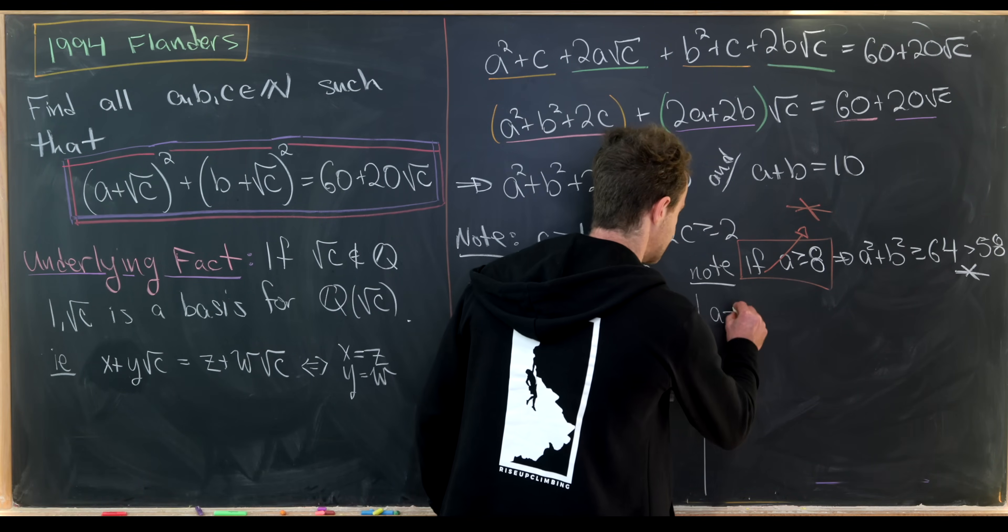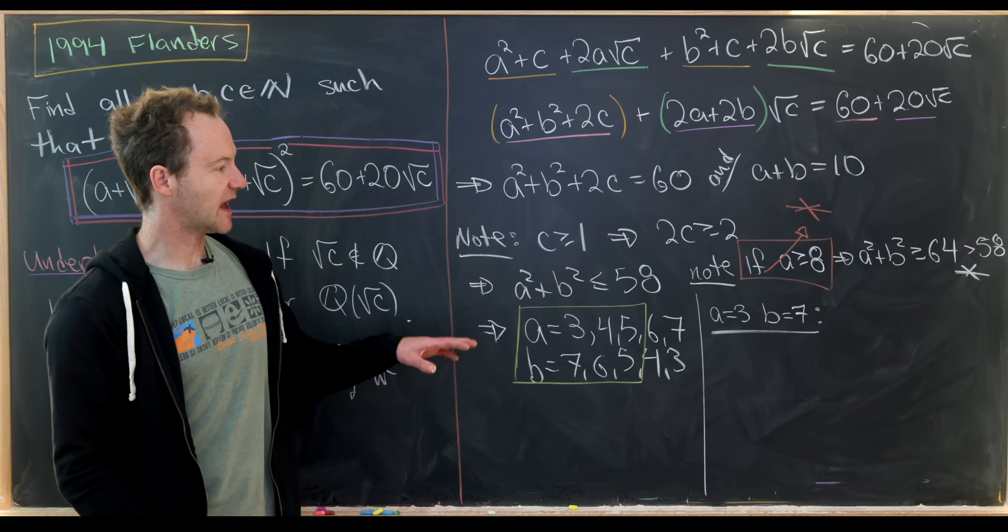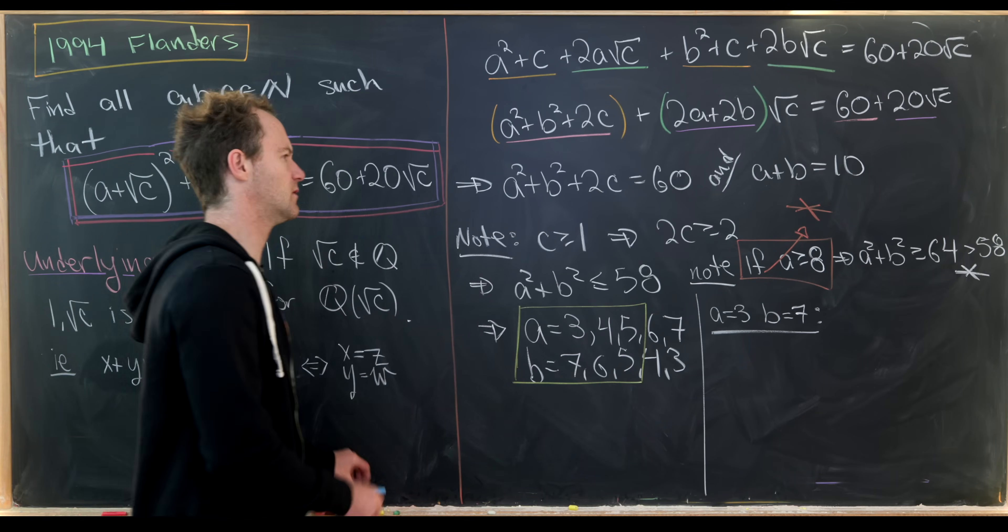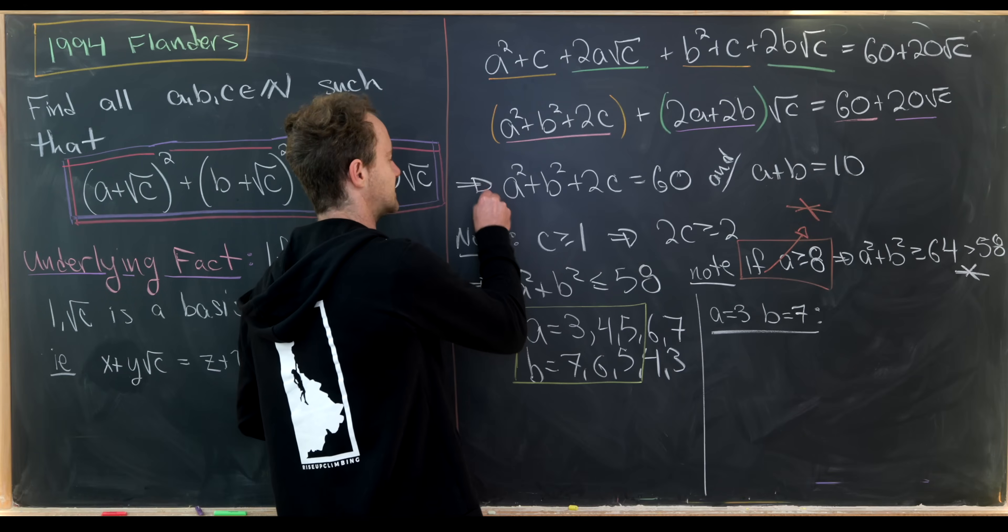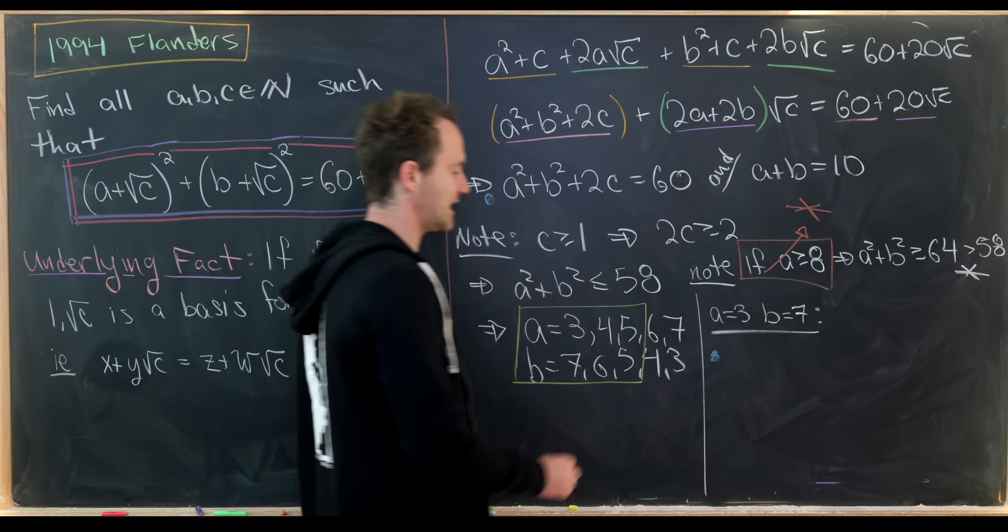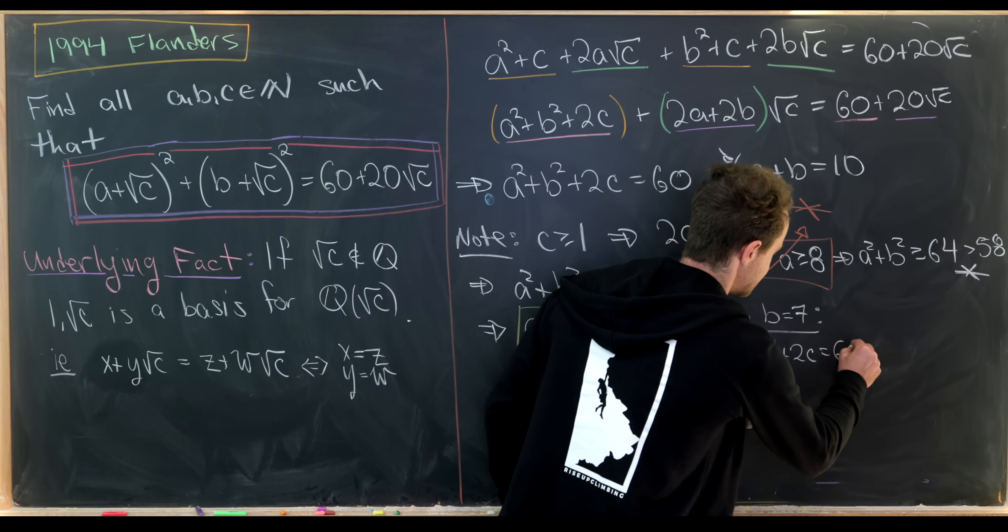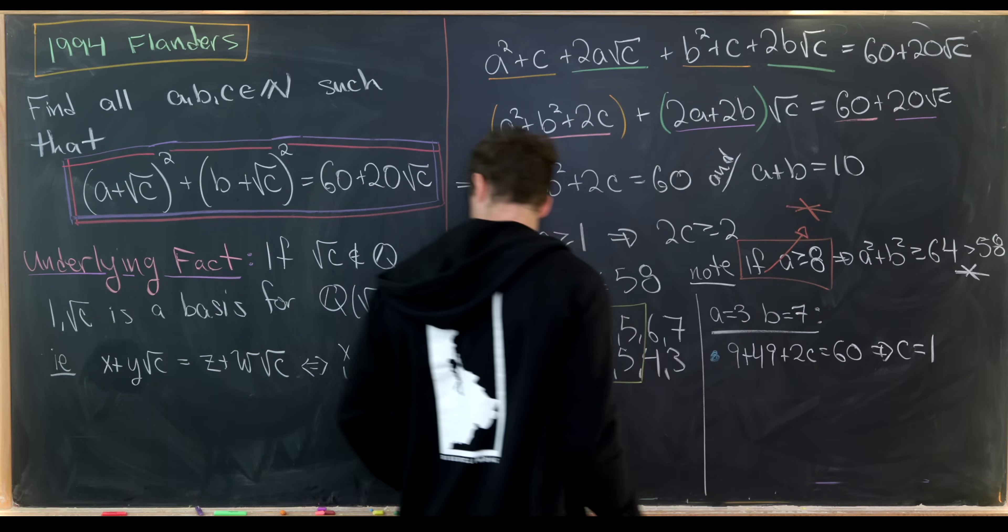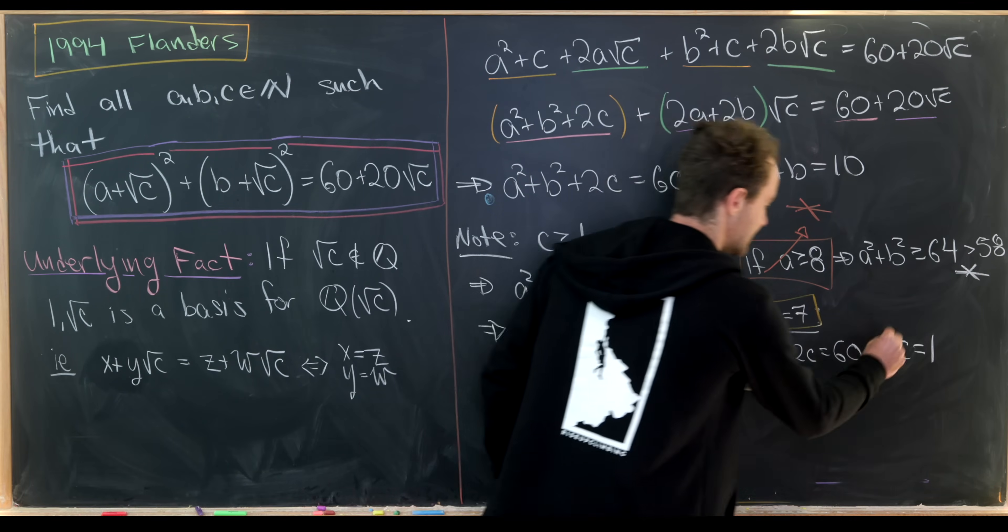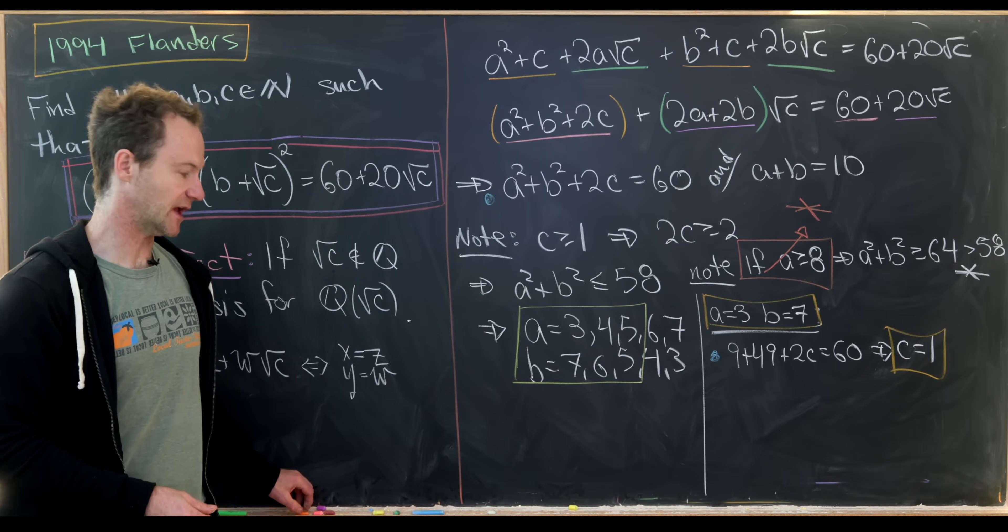So let's start with a is equal to 3 and b is equal to 7. So if a is equal to 3 and b is equal to 7, back into this equation right here, which maybe we'll put a blue dot next to, we'll have 9 plus 49 plus 2c is equal to 60. So that tells us that c is equal to 1. And that gives us our first solution of 3, 7, and 1. And then the symmetric solution of 7, 3, and 1.